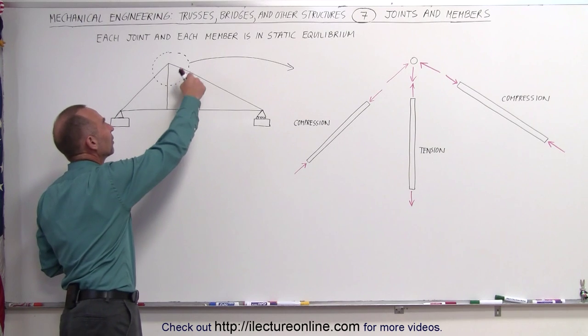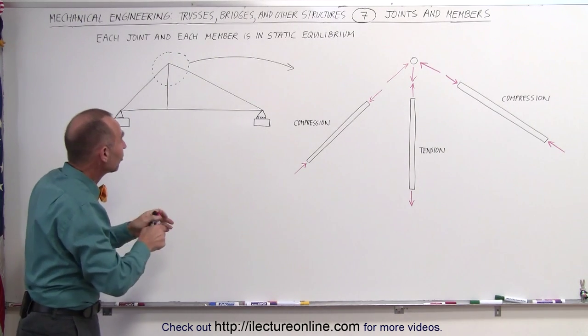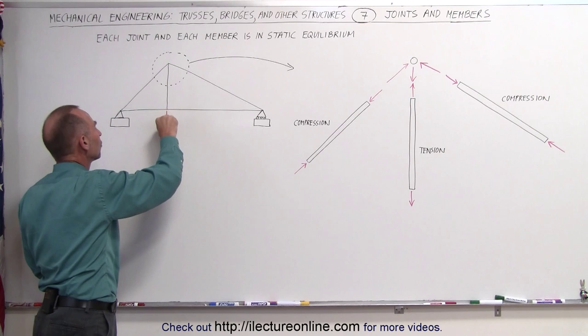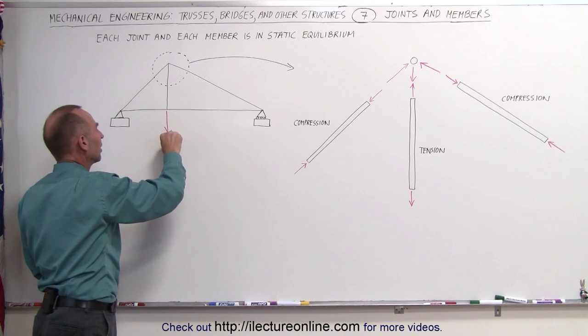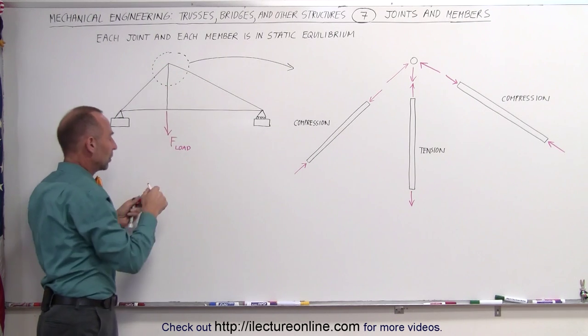Let's take a closer look at this very top joint right here. What happens when we put a load onto this truss in this direction? Let's say that this is a force of some sort of load. How does that translate to that joint up there?